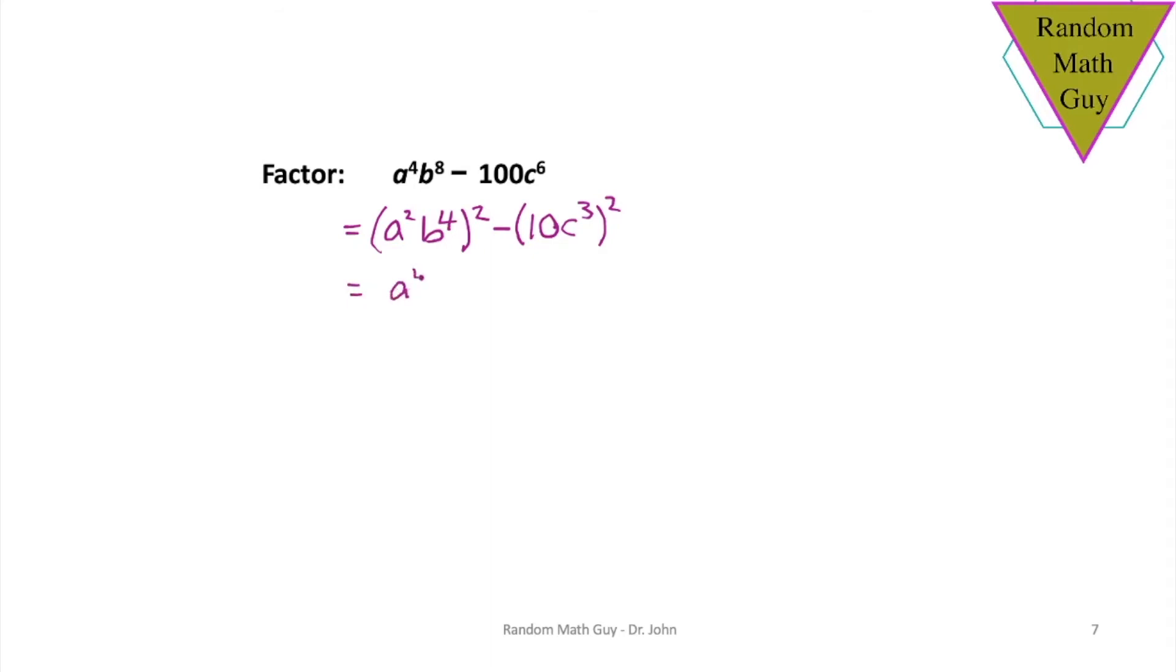Let's write this one out: a squared b to the 4 plus 10 c cubed. I could copy and paste that, but I'll just do it freehand here: a squared b to the 4 minus 10 c cubed.